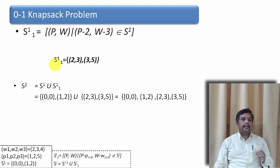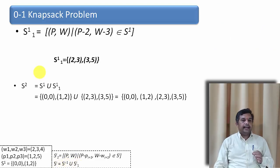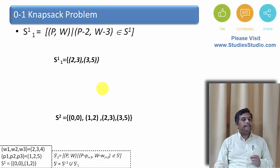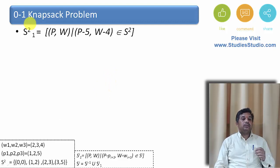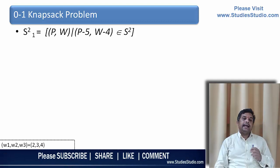Now I find S2 by taking the union of S1 and S1,1. The formula is Si = S(i-1) union S(i-1),1. S1 had {(0,0), (1,2)} and S1,1 is {(2,3), (3,5)}. Taking the union, S2 = {(0,0), (1,2), (2,3), (3,5)}.